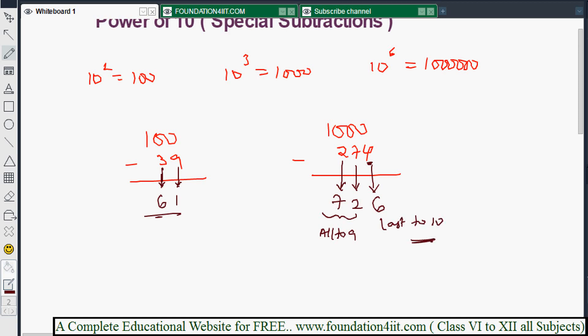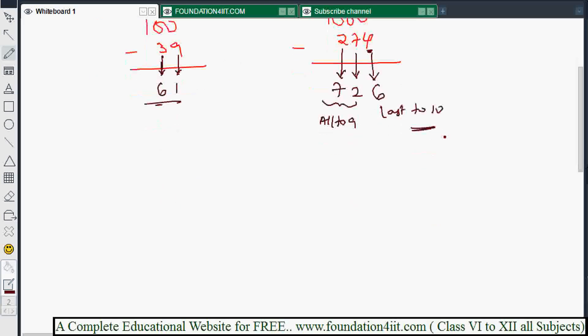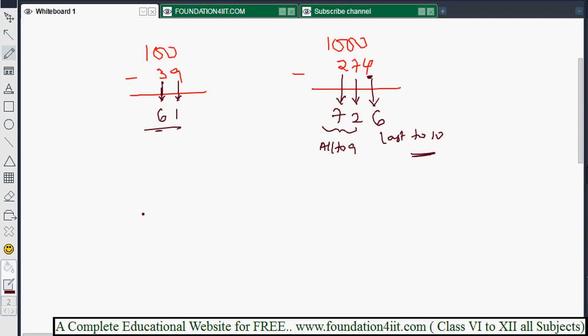This is nikhilam navatascaramam dasatah - make it to 9. For 1000 minus 274, the answer is 726. I'll explain one more example with a bigger number.